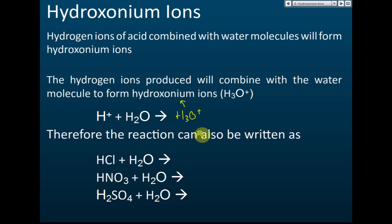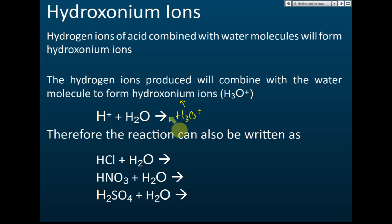This is usually what happens: acid dissolves in water, it forms hydrogen ions, these hydrogen ions combine with water to form hydroxonium ions. The ions that give acidity to the solution — that cause the solution to become acidic — are the hydroxonium ions, not the hydrogen ions directly. The hydrogen ions combine with water to form hydroxonium ions.